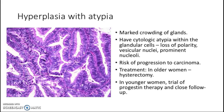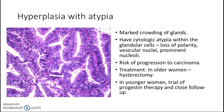Hyperplasia with atypia also shows marked crowding of glands but presents with cytologic atypia — loss of polarity, hyperchromatic to vesicular nuclei with prominent nucleoli, and enlarged and elongated nuclei. There is a risk of progression to carcinoma in hyperplasia with atypia. In older women, treatment is hysterectomy, but in younger women, clinicians will give a trial of progesterone therapy with close follow-up before deciding the next step.